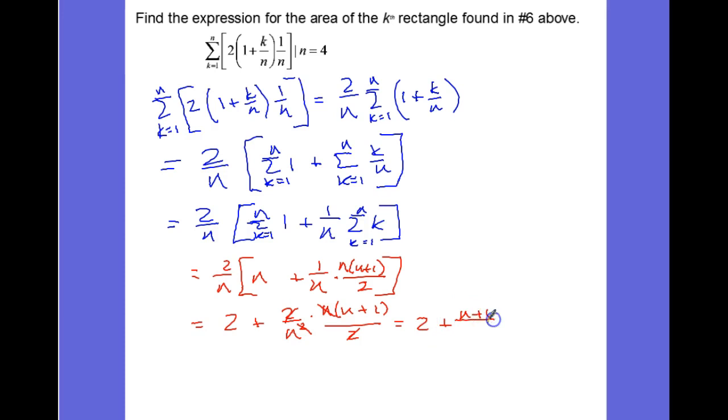If I want to rewrite this with a common denominator, I could think of 2 as 2/1, multiply top and bottom by n to get 2n, plus n plus 1 over n. 2n plus n is 3n, so (3n + 1)/n. That's actually what all of this would be equal to.